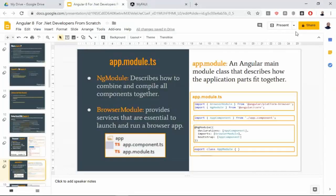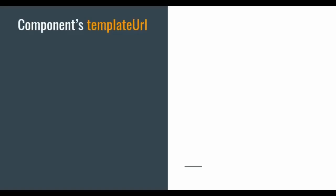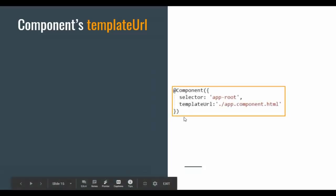So what is the solution? The solution is 'templateUrl'. Because it is quite difficult to write HTML directly in the template property, we will write our HTML in a separate HTML file and give that file's URL using templateUrl instead of template. The file is named app.component.html — these are the coding standards for app.component.ts, and the view part is app.component.html.